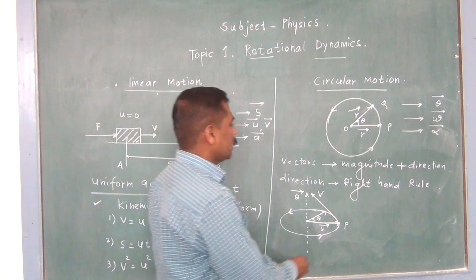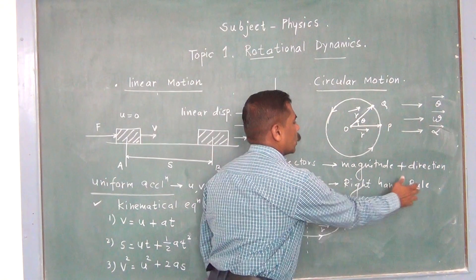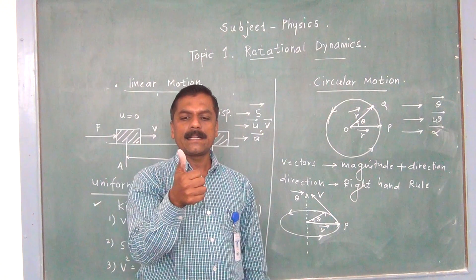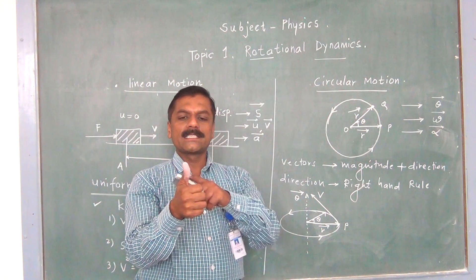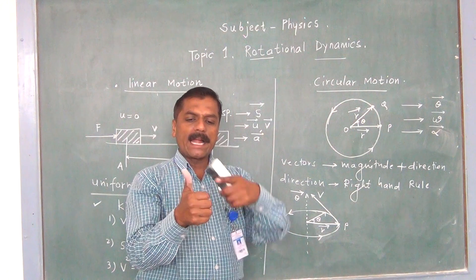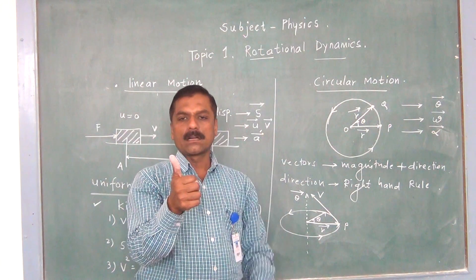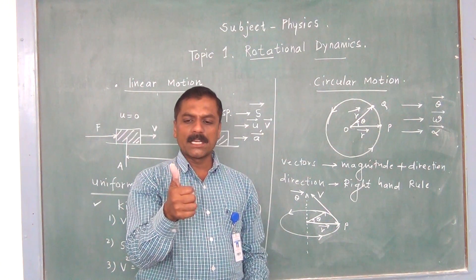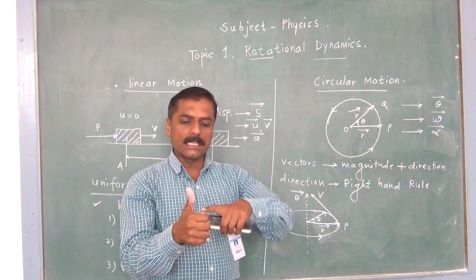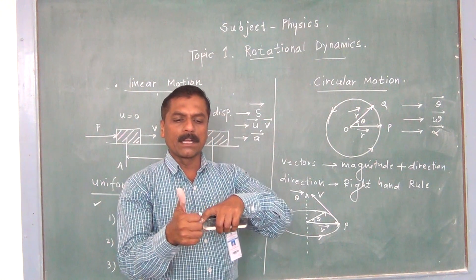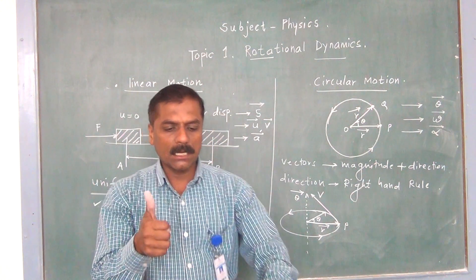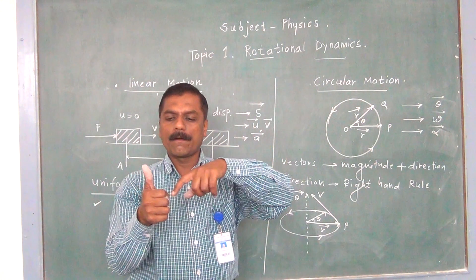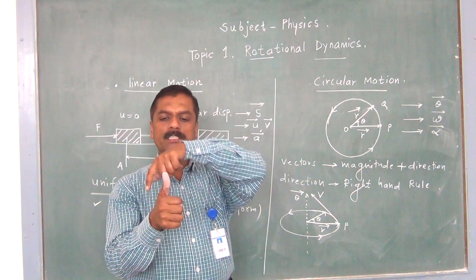So what is this right-hand rule? If we consider this is the right hand, then the thumb is outstretched and these are the curled fingers. If you observe here, you will find these are the curled fingers. The curled finger will denote the direction of the motion of the particle.